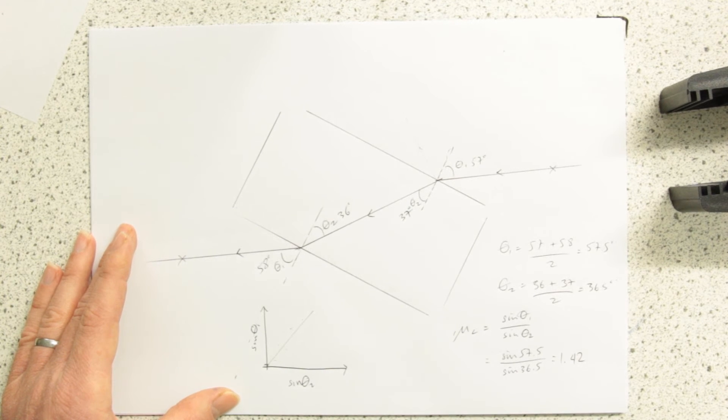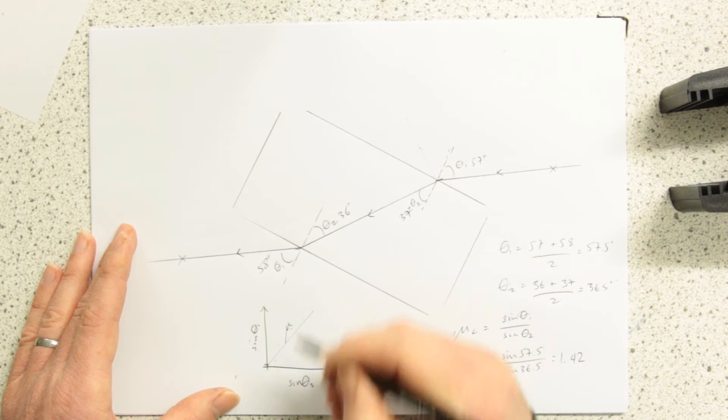You might get an intercept, which would be a systematic error, and you can actually calculate your refractive index from that.